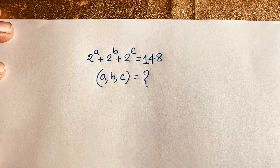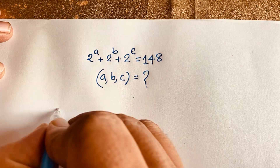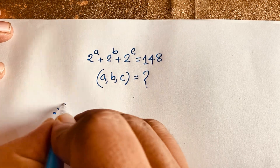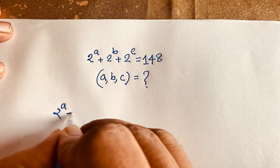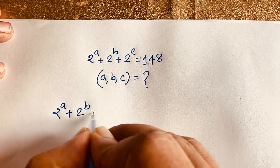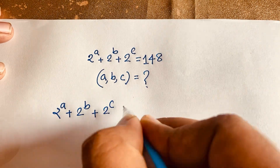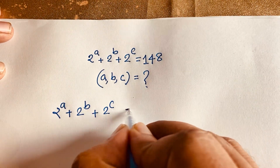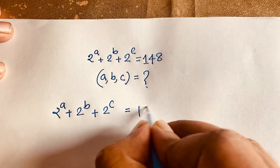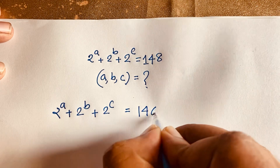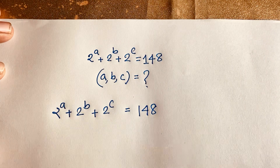Our question is 2 to the power a plus 2 to the power b plus 2 to the power c is equal to 148. This is our question.